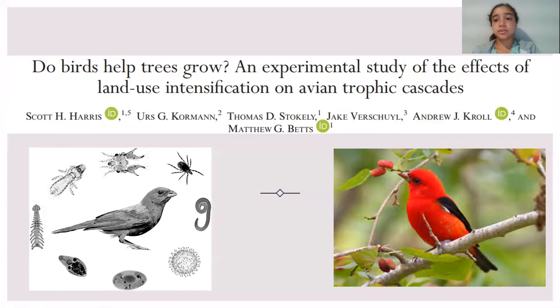Now onto the study that I will be focusing on today, which is called Do Birds Help Trees Grow? An experimental study of the effects of land use intensification on avian trophic cascades. This study came about with the knowledge of trophic cascades, but they had the question of how strong are these cascades? Bottom up and top down controls were their baseline for running the study because both affect trophic cascades and their strengths. They came up with two hypotheses to test this.